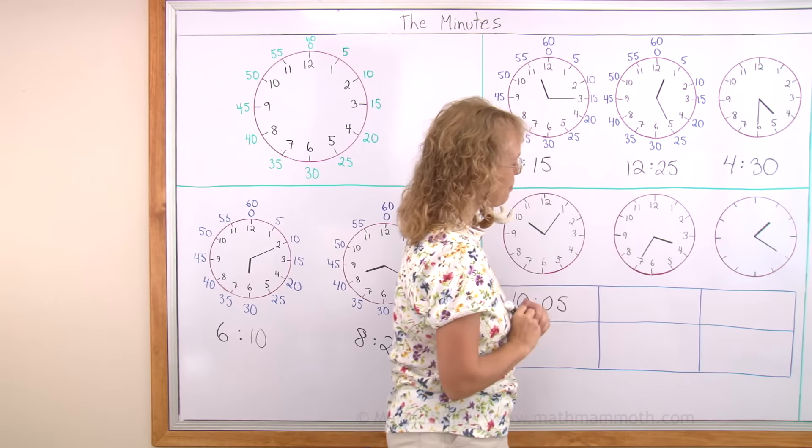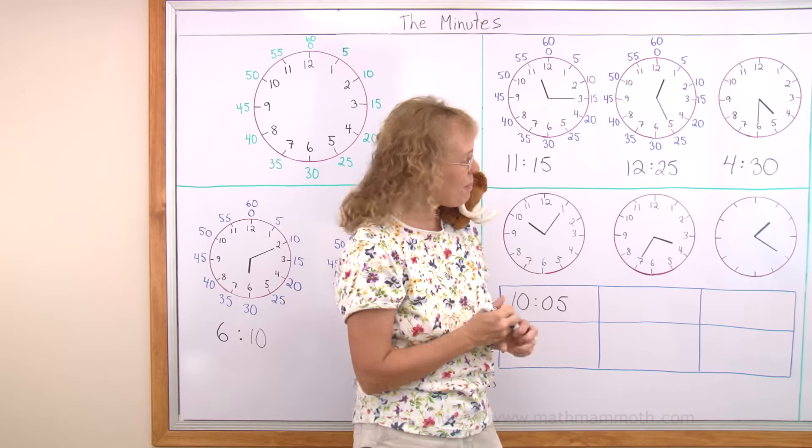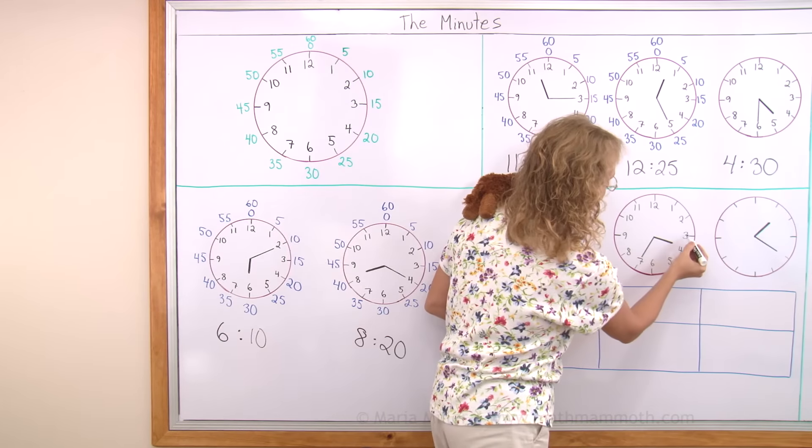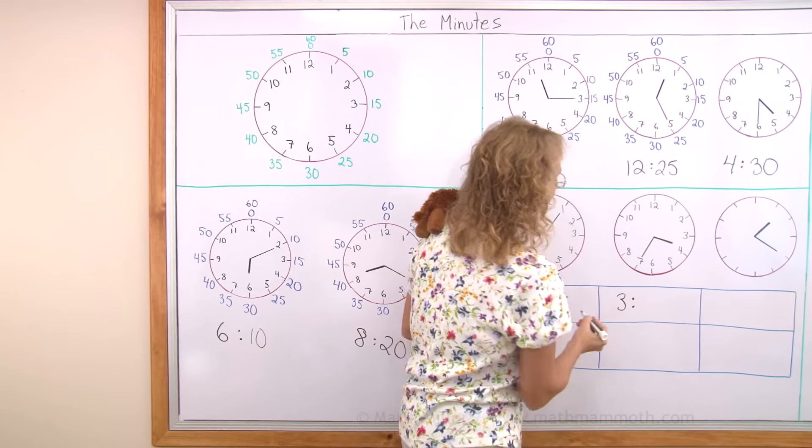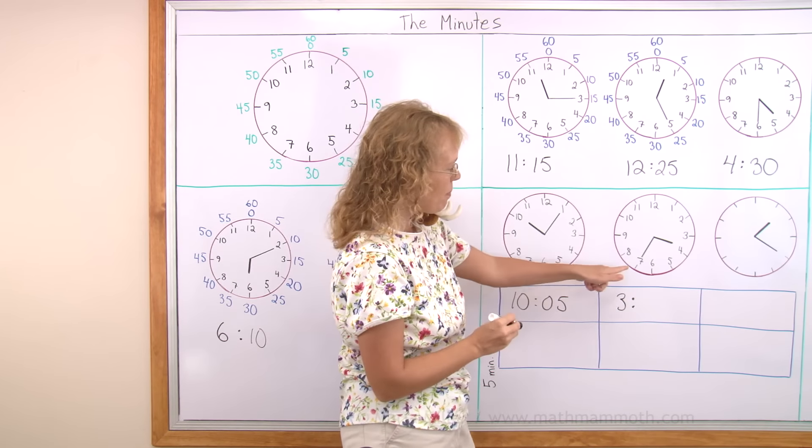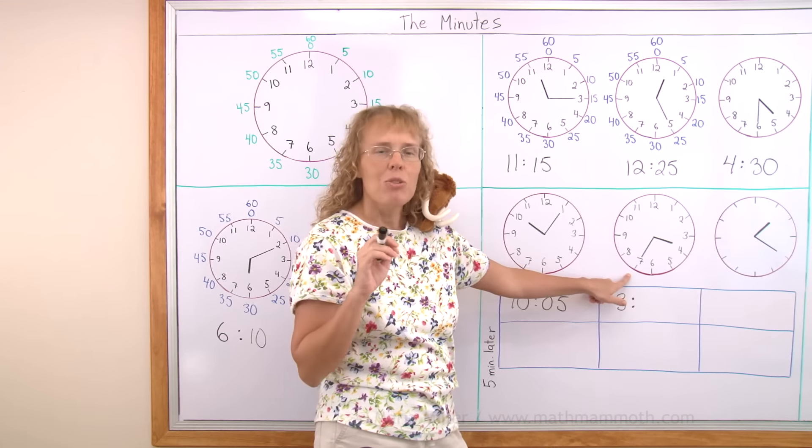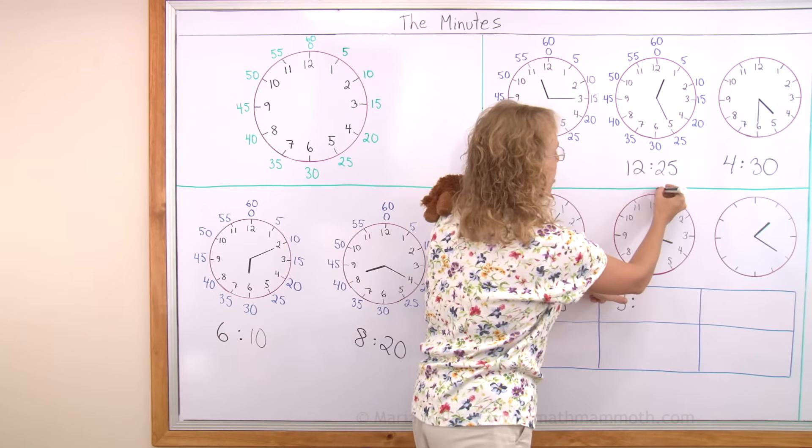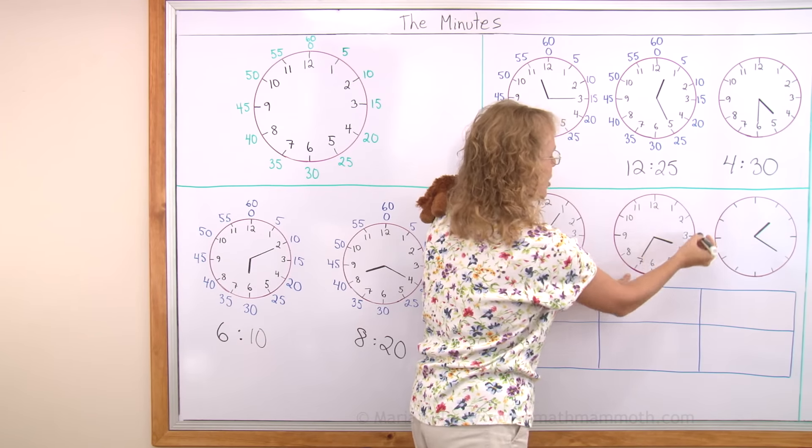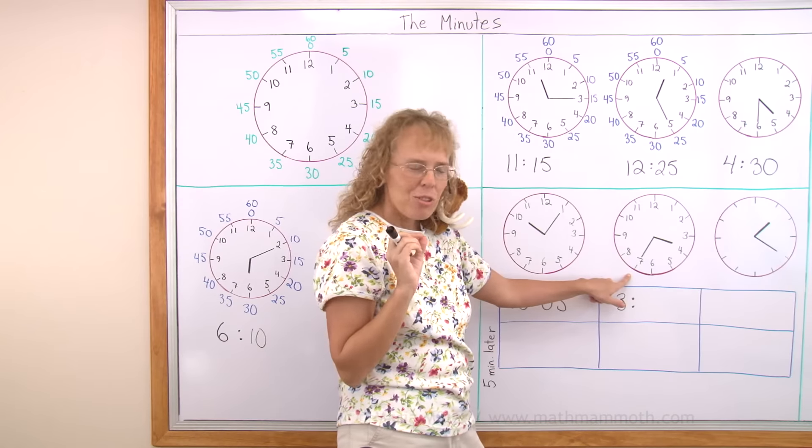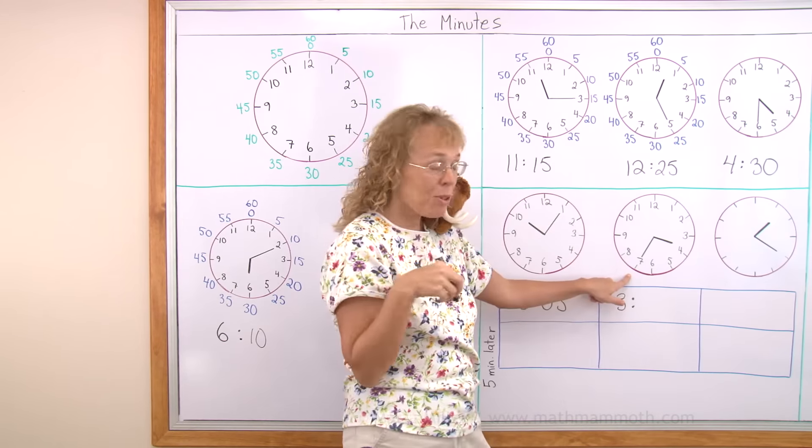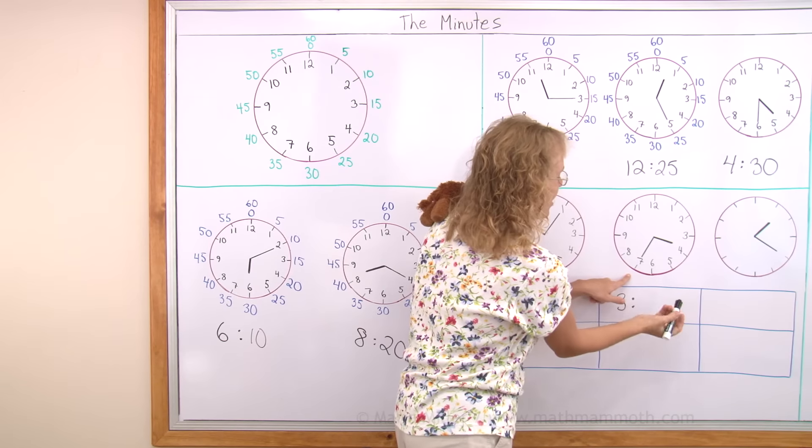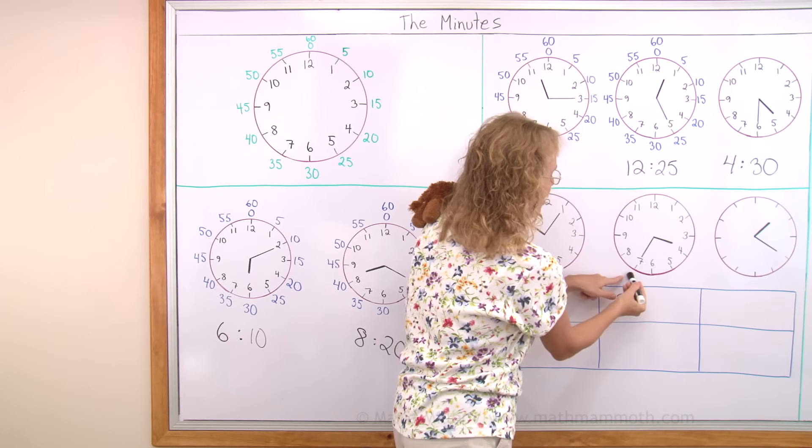How about this one? First the hour hand. It is between 3 and 4, so it is 3 hours. And then the minutes. You need to basically count by 5's all the way from here. 0, 5 and so on. But if you happen to remember that there's 30 right here. The half hour point is 30 minutes. Then it's easy to go 30 and 5 more. 35.